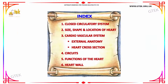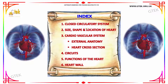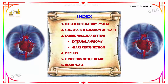These are the topics we are going to cover in this session. We are going to see about the closed circulatory system, and we will be studying about the size, shape and location of the heart, followed by the cardiovascular system, the external anatomy and the cross section of the human heart. We will also see about the circuits which help the heart in functioning, and then the functions of the heart and the heart wall.